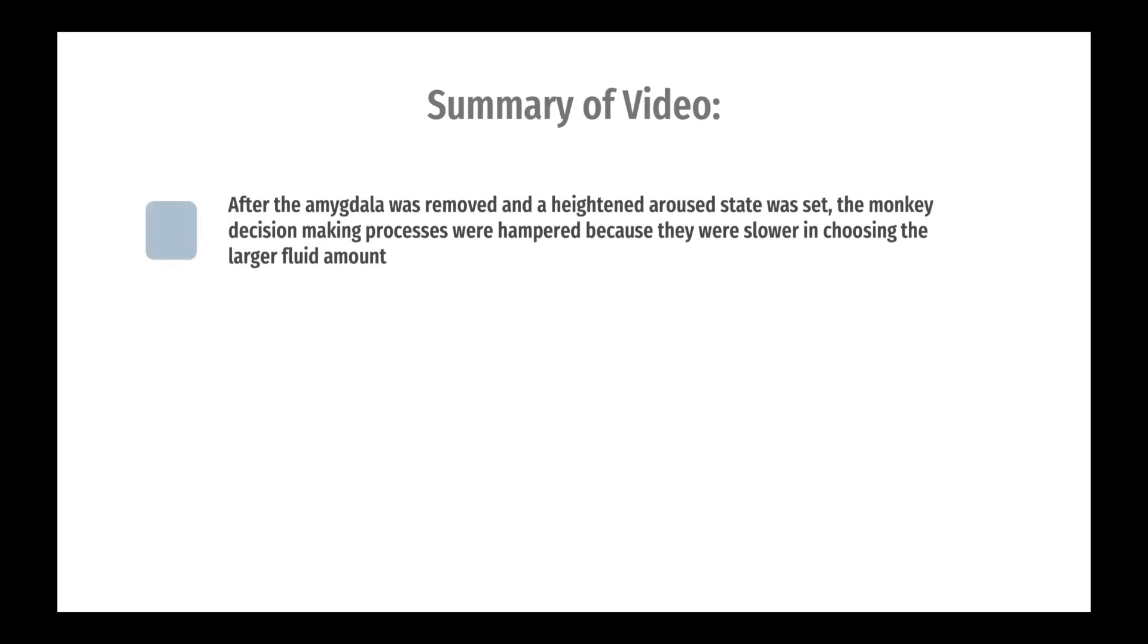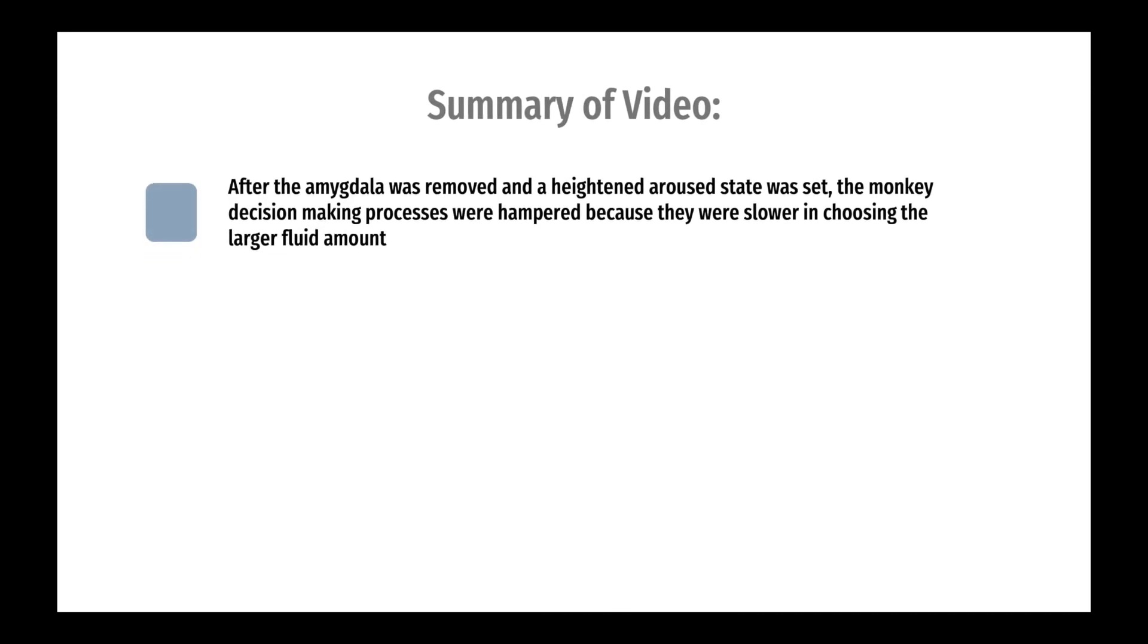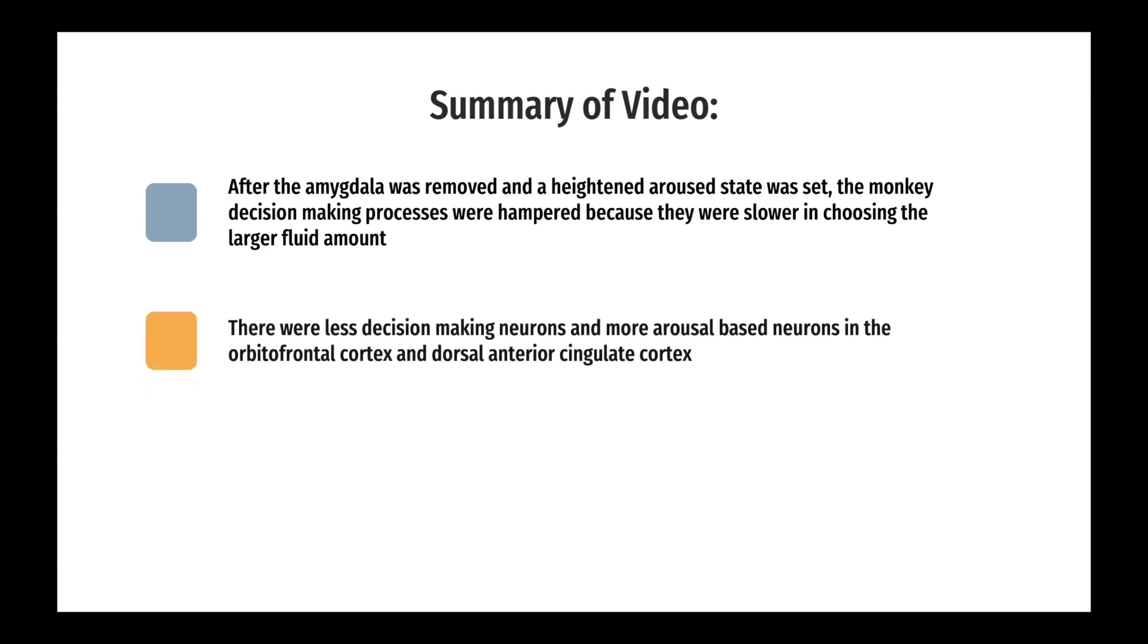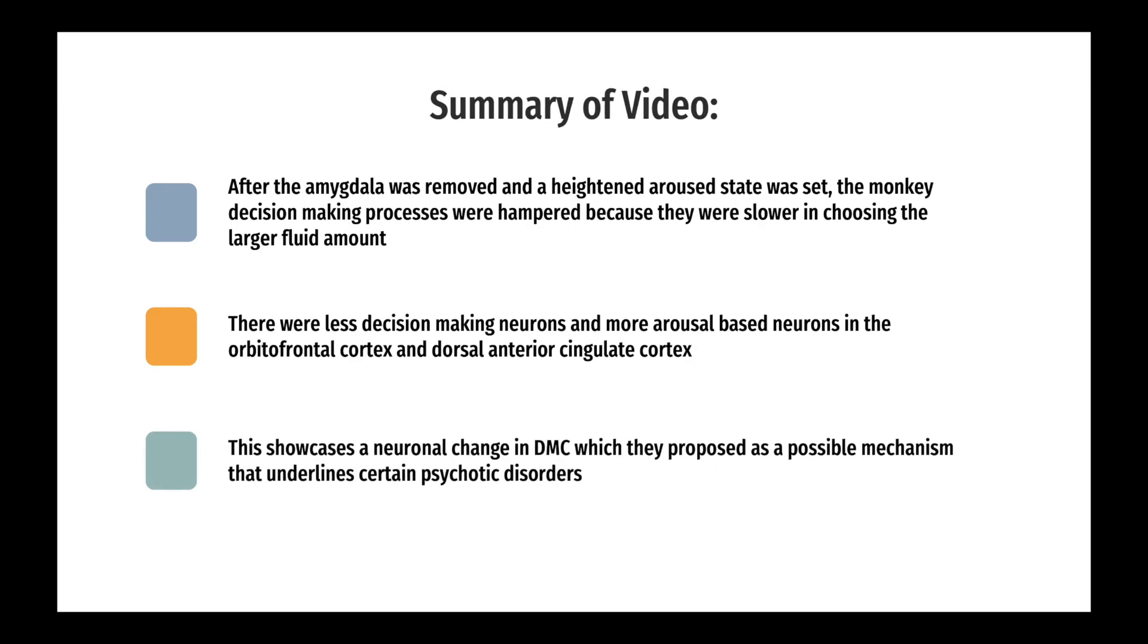Just to recap, the researchers found that after the amygdala was removed and a heightened aroused state was set, the monkeys' decision-making processes were hampered because they were slower in choosing the larger fluid amount. They also found that there were less decision-making neurons and more arousal-based neurons in the orbital frontal cortex and dorsal anterior cingulate cortex, showcasing a neuronal change in decision-making centers, which the researchers proposed as a possible mechanism that underlies certain psychiatric disorders.